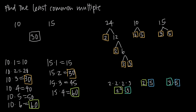Looking at 2: the largest number of factors of 2 is 3 (from 24), while 10 only has 1 factor of 2. So I take 3 factors of 2, which is 2 cubed. Looking at 3: I have 1 factor of 3 in both 24 and 15, so I just take 1 factor of 3. Looking at 5: I have 1 factor of 5 in both 10 and 15, so I take 1 factor of 5. Now I multiply all of these together to get my least common multiple.